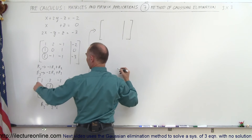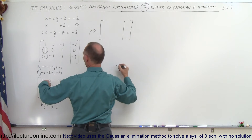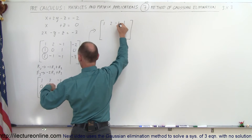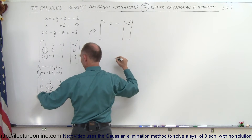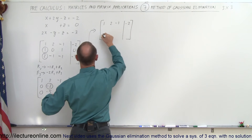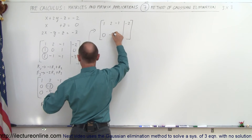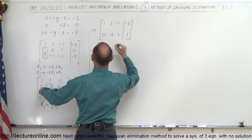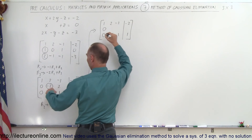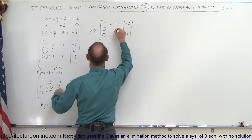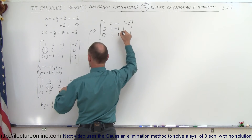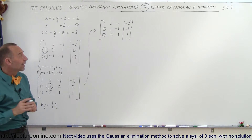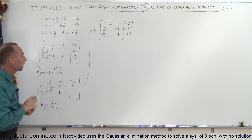Our matrix now becomes the following. The first row doesn't change: 1, 2, negative 1, and negative 2. The third row doesn't change: 0, negative 5, 1, and 1. And the second row becomes: 0, positive 1, negative 1, and negative 1, because we took every element and divided it by negative 2.